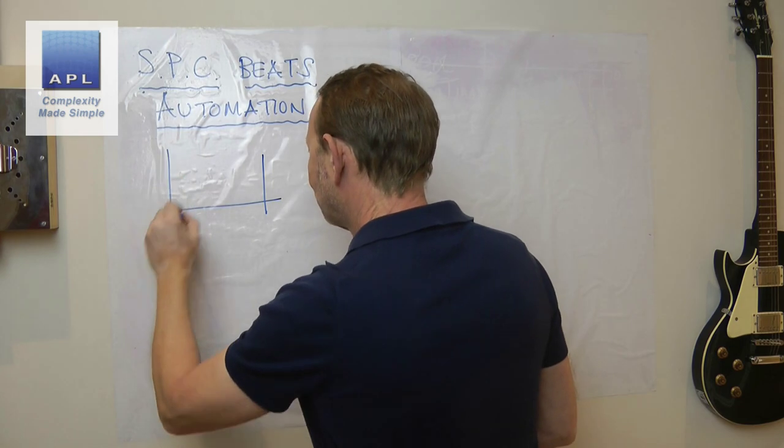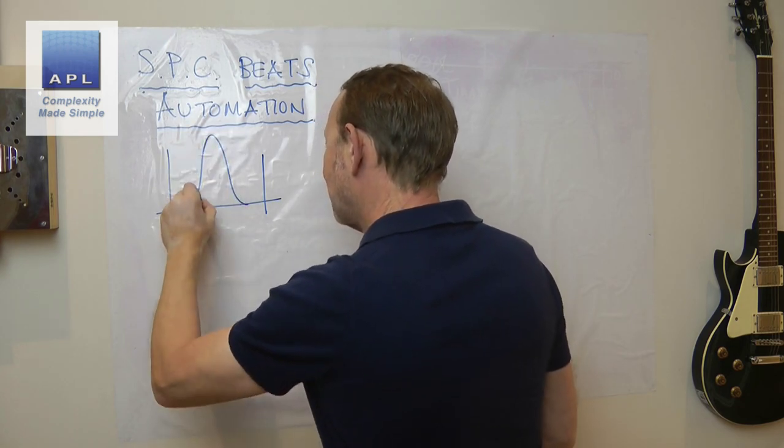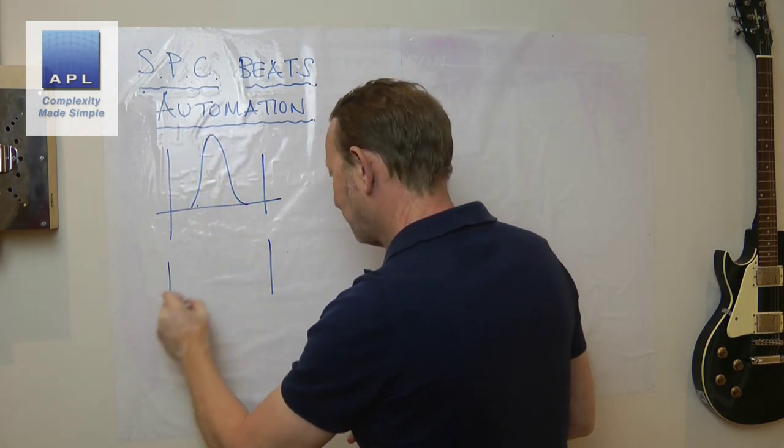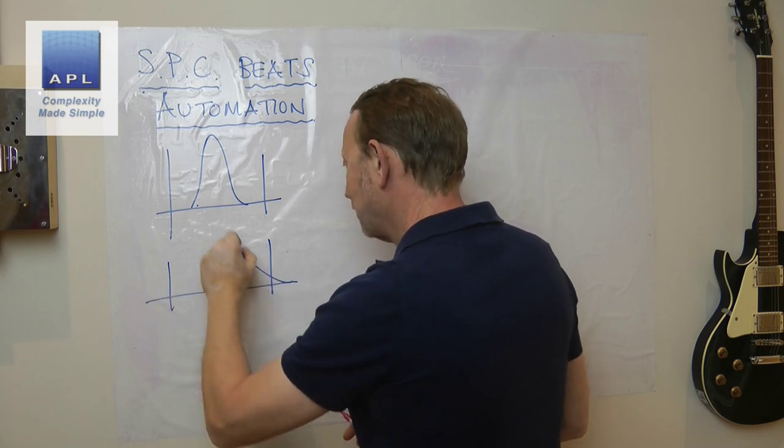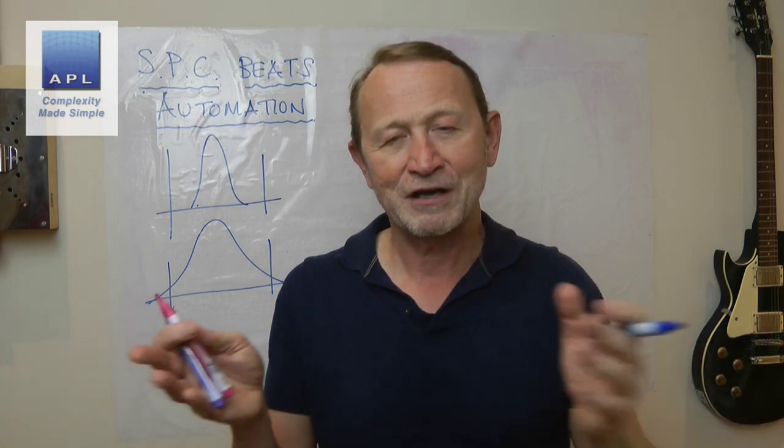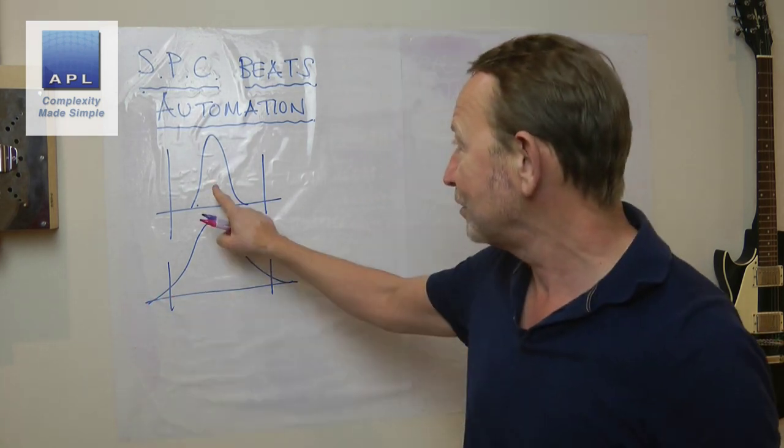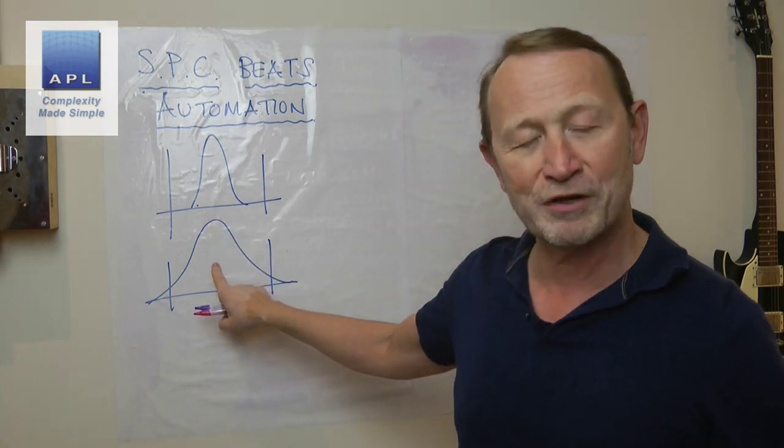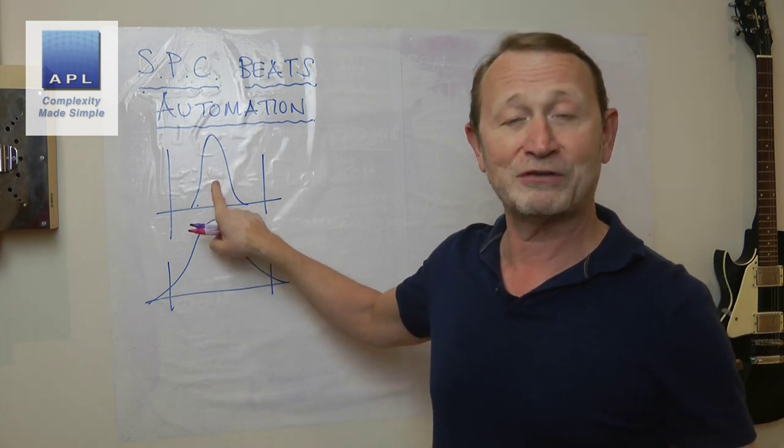Your process, of course, will generate a distribution. If you simply set it, take your hands off it, and observe what happens, it will produce one of these.